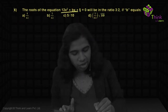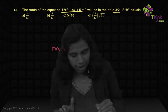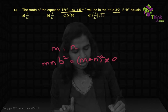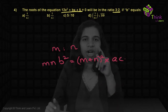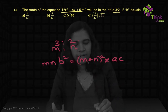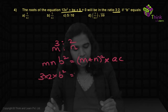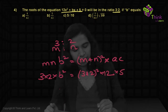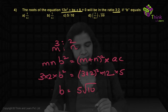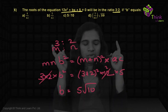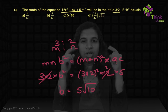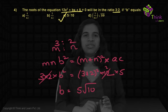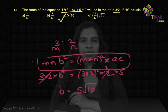This is a direct question. A quadratic equation is given with roots in the ratio 3:2. We know that when roots are in ratio M:N, then MN·B² = (M + N)² · AC. With M = 3, N = 2, B as unknown, A = 12, C = 5: 6B² = 25 × 60. Simplifying, B² = 250, so B = 5√10, which is option C.